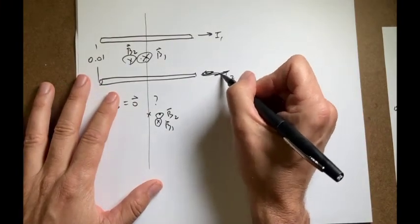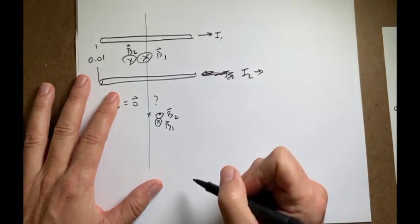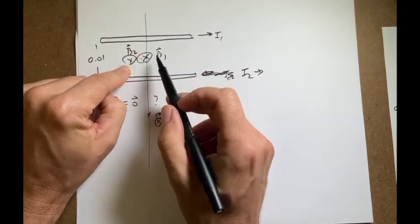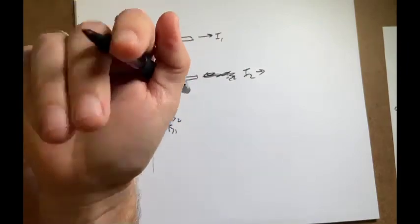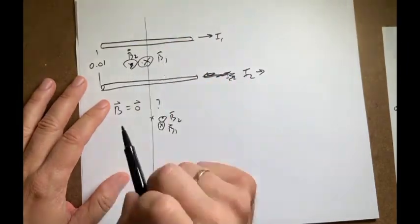Now what if I did this? What if I switch this? So now I2 and I1 are in the same direction. In that case, I2 is going to make magnetic field 2 now coming out of the page this way. So now these two in the middle would have the same magnitude opposite directions and they would cancel.